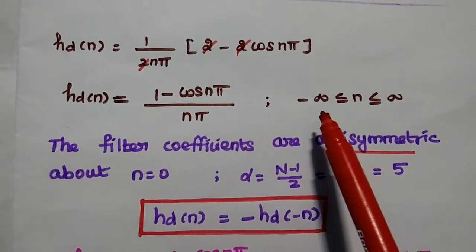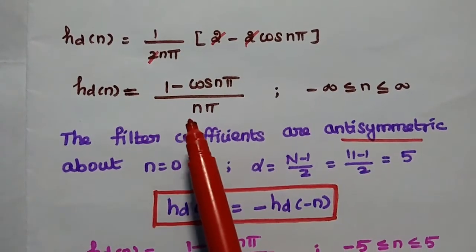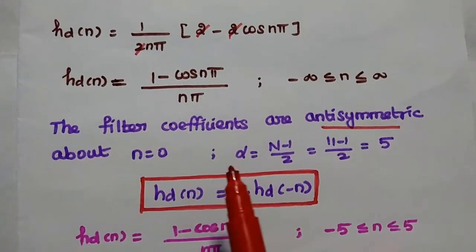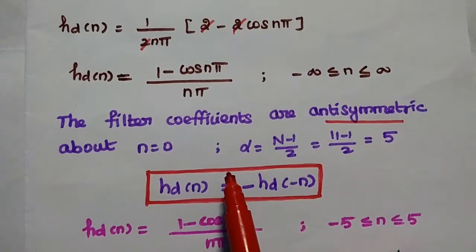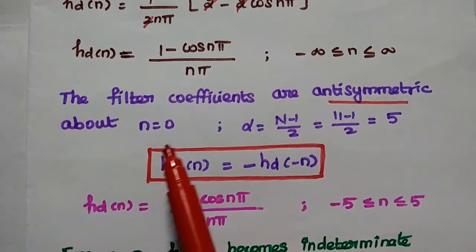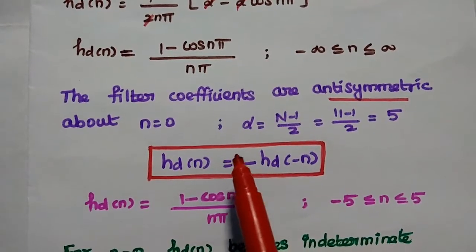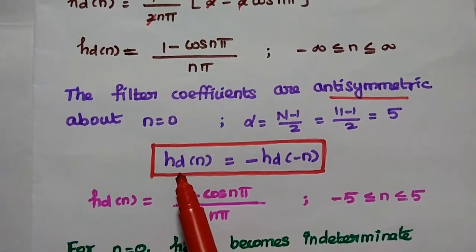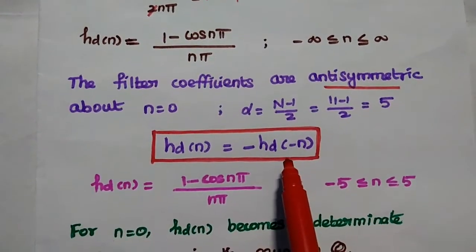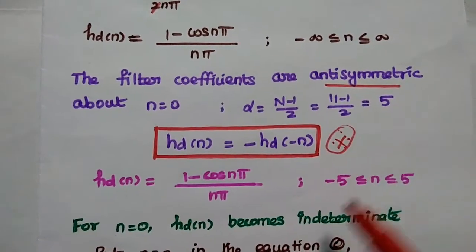Here the n value varies from minus infinity to plus infinity, so this impulse response sequence is an infinite duration sequence. But we are going to design an FIR filter, that is a finite impulse response filter. The filter coefficients are anti-symmetric about n equal to 0, with the condition hd(n) equals minus hd(minus n).